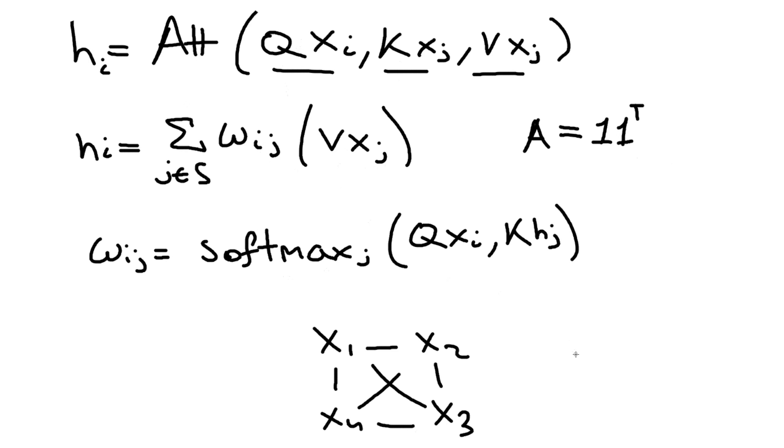First of all, the most obvious problem is that in transformers, this scales quadratically with the number of terms, because you have a fully connected graph. So transformers are a special case of graph attention networks where the graph is fully connected. GATs in some sense are more efficient because they are able to work with potentially much sparser graphs, which means you have in practice much less than quadratic number of edges.